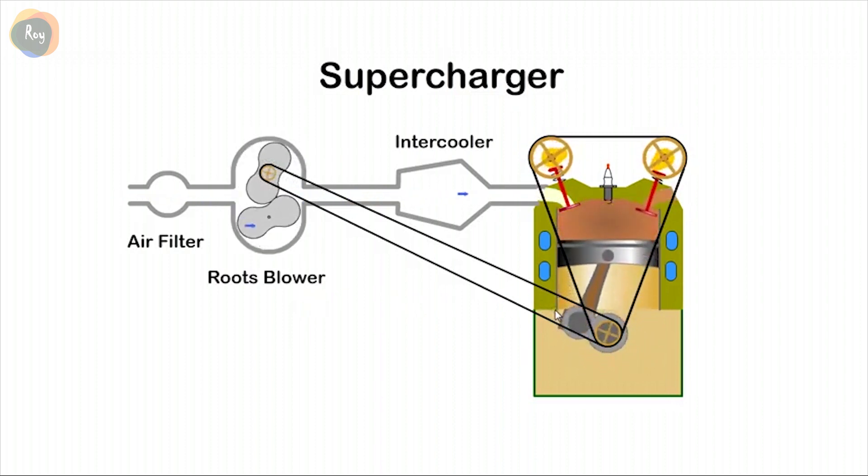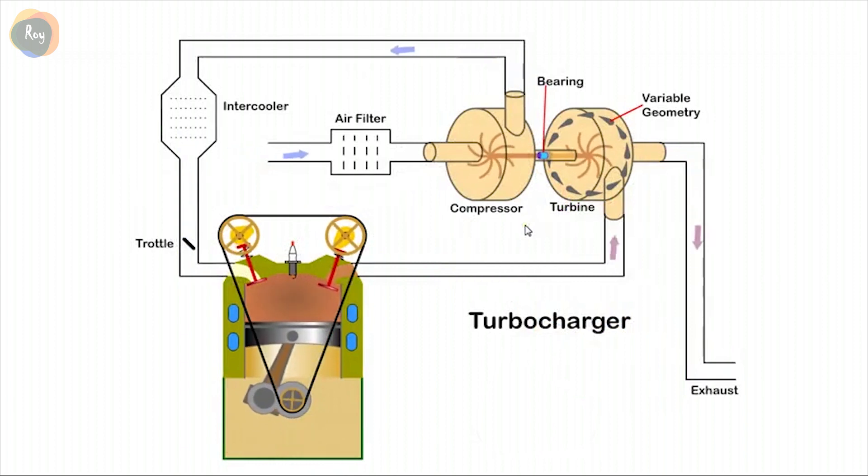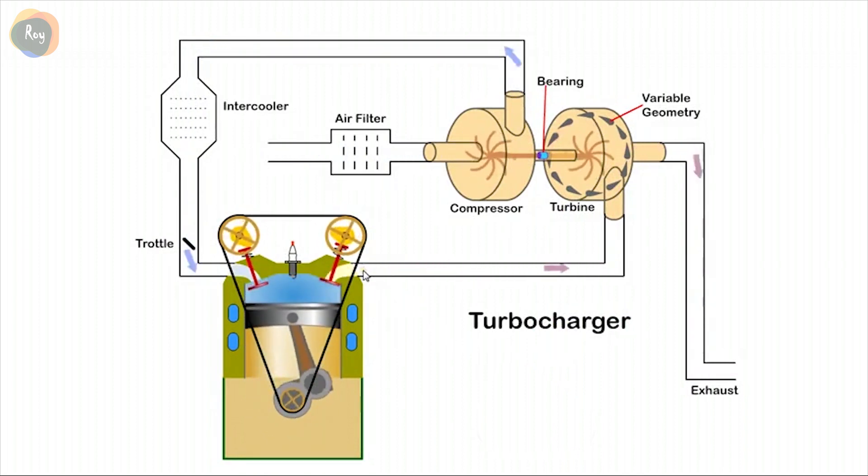A better option is to use a turbocharger which is driven by the waste exhaust gas. A turbocharger uses the energy in the waste gases exiting from the cylinder to spin a turbine which drives a compressor mounted on the same shaft. The compressor draws clean air in through a filter and compresses it. Unfortunately, compressing air also heats it, resulting in expansion. It's best if this air is cooled with an intercooler before entering the engine.